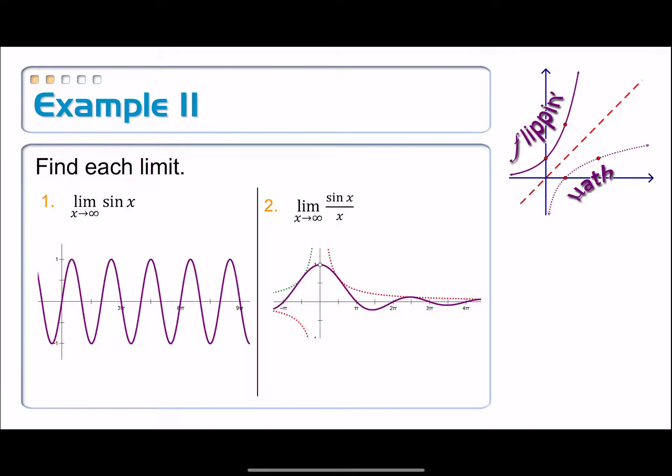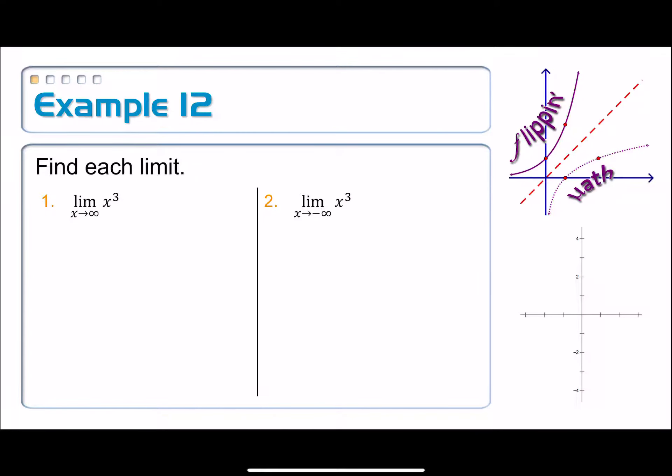Let's look at a couple more. We've got on example 12, the limit as x approaches infinity of x cubed. Well, I take infinity, I cube it, it's still infinity. This one should be infinity. Nothing strange there. How about negative infinity? Plug negative infinity and there I get, when I cube a negative number, it's still negative infinity. This is just referring to the end behavior of that cubic graph.